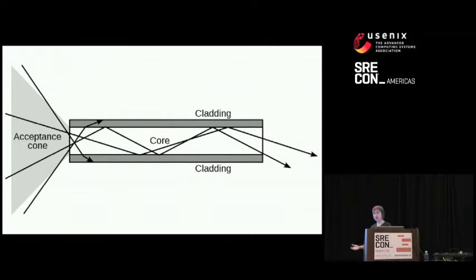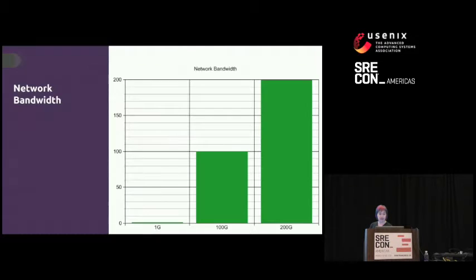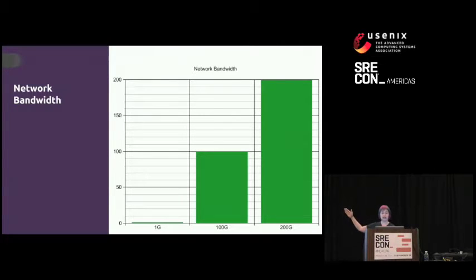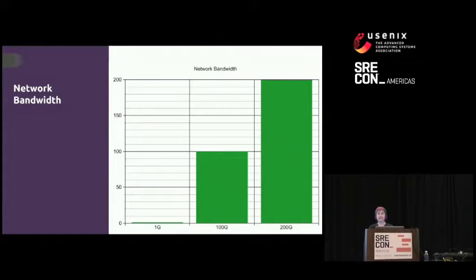Now that we know how this works, let's go back to the bandwidth chart. A single laser wavelength allows us to put about 200 gigabits per second onto a single cable. This is pretty good if you see the scale chart. But as you can see, if you have a large rack of servers — 20 to 40 servers — each outputting kitten pictures to the internet, we'd still need a lot of cabling around the world.